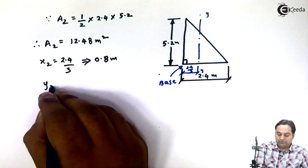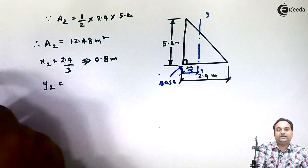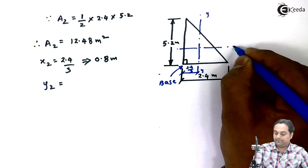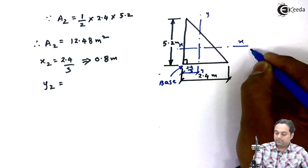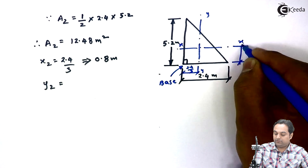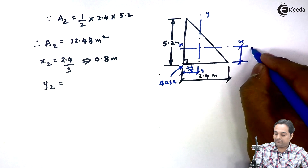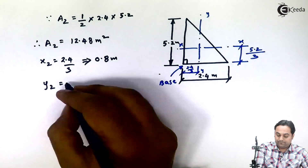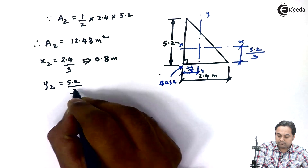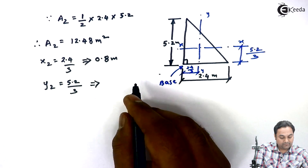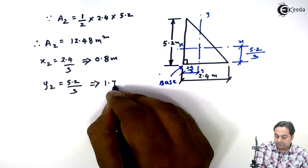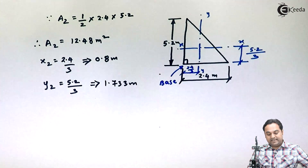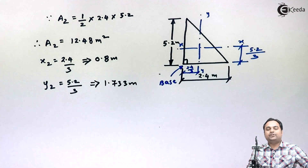y2 is the location along the y-direction for the triangle. The centroid is at one-third of the height from the base, so y2 = 5.2 / 3 = 1.733 meters. Now that I have all the values, I can proceed with the calculation of x̄ and ȳ.